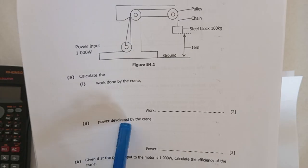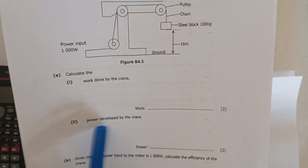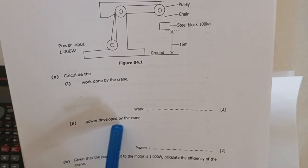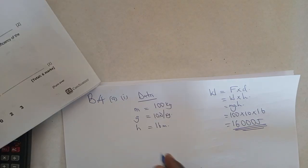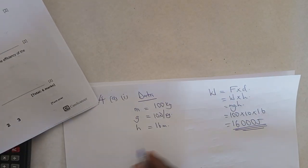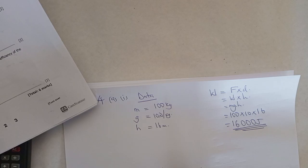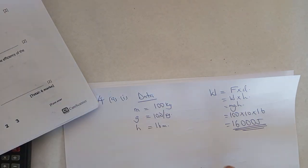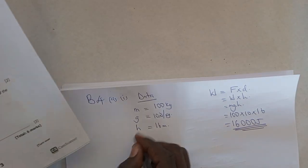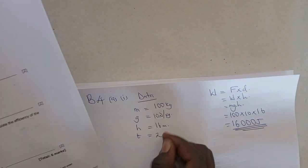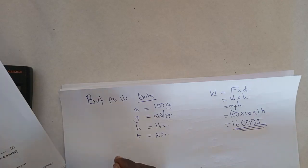Then we go to question A2. Calculate the power developed by the crane. We need to know that from here we can come up with another thing. So this data is incomplete because there is also time here. Time is 20 seconds.